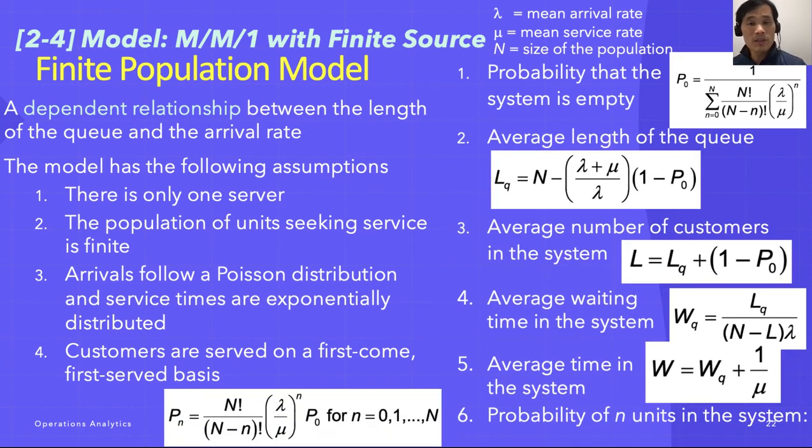So we have probability that the system is empty P0, average length of the queue LQ, average number of customers in the system L, average waiting time in the system WQ, average time in the system W, and probability of N units in the system PN. Notice that we are using N, the uppercase N, as the finite population. It's not infinite, but we have finite population. What makes it complicated is we have this summation, and that makes our calculation a little more complicated than before.